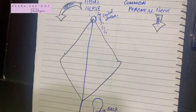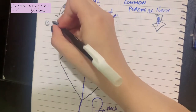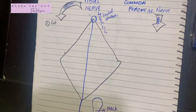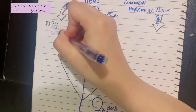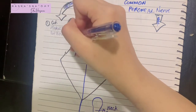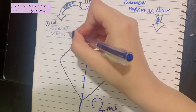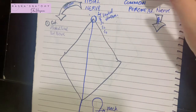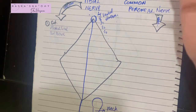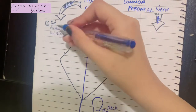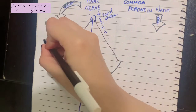The tibial nerve gives branches divided into categories. The cutaneous branch includes the medial sural cutaneous nerve. Keep this in mind because the medial sural cutaneous nerve will merge with a nerve from the common peroneal nerve to form the sural nerve. The sural nerve supplies the lower half of the back of the leg and the lateral border of the foot up to the little toe.